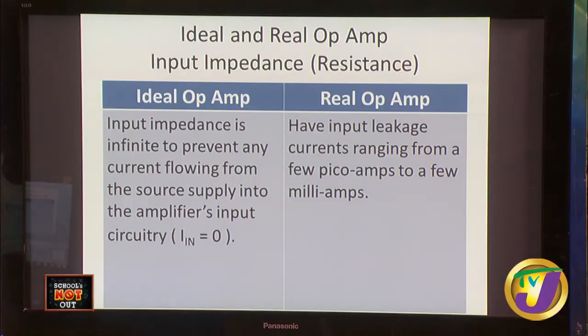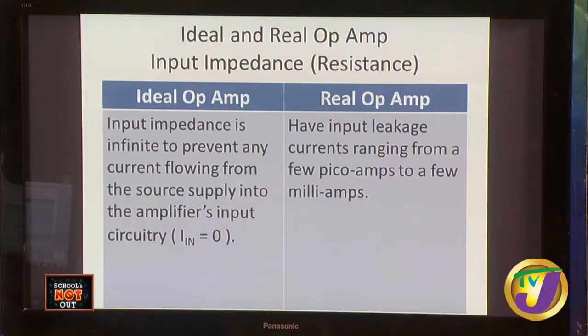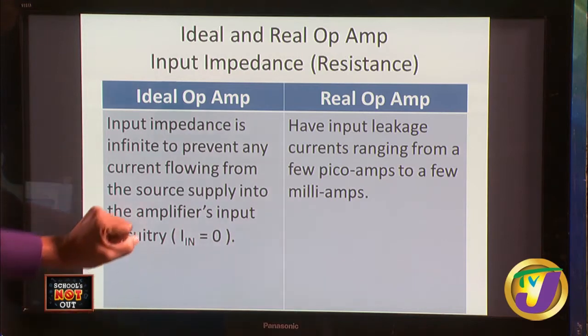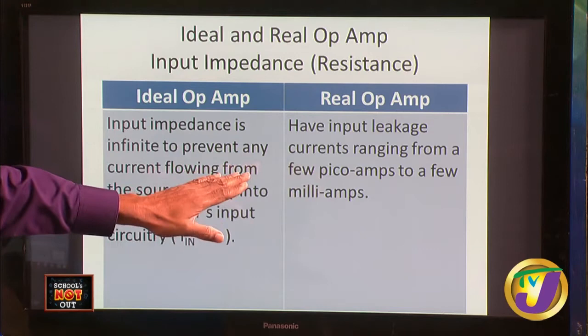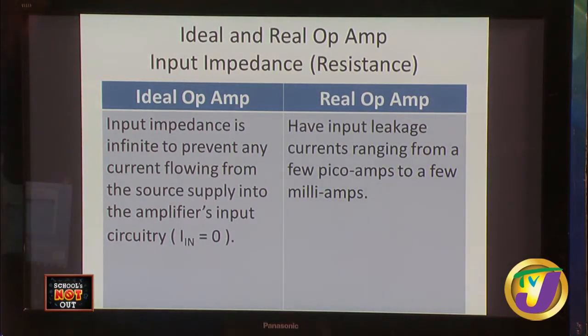Now we're going to look at the difference between an ideal operational amplifier and a real operational amplifier. For an ideal operational amplifier, the input impedance is infinite — meaning we can put essentially nothing into the operational amplifier and still get something out. So no current flows from the source supply into the amplifier's input. But a real op-amp has input leakage currents ranging from pico amps to milli amps — current actually gets into the operational amplifier.